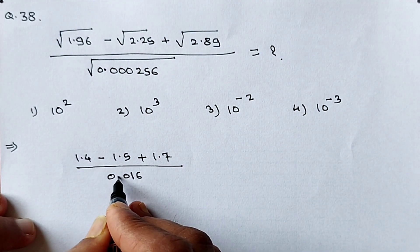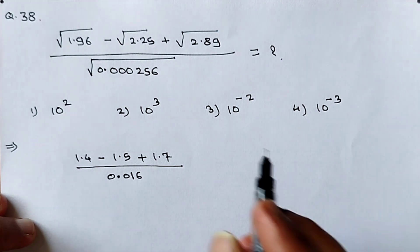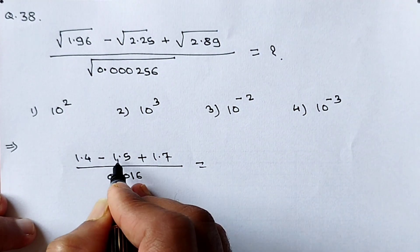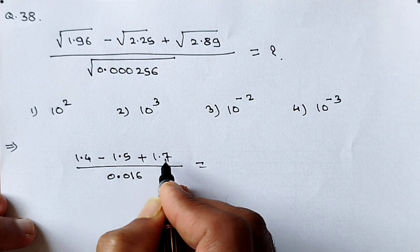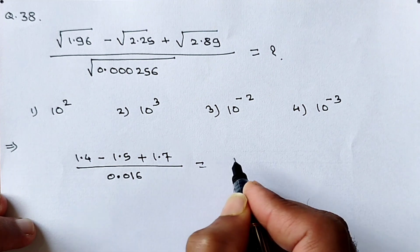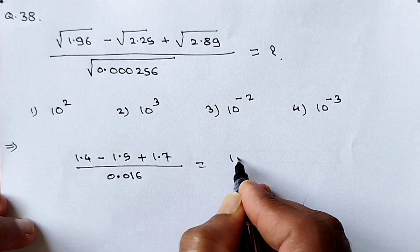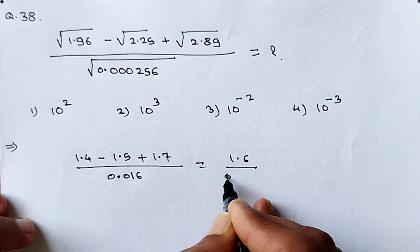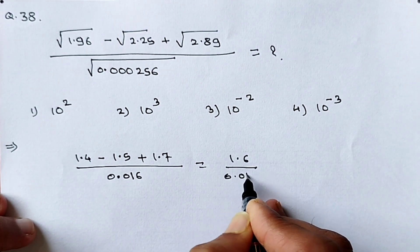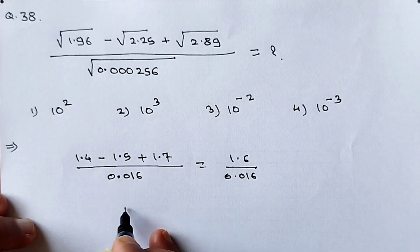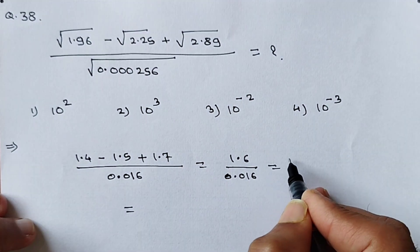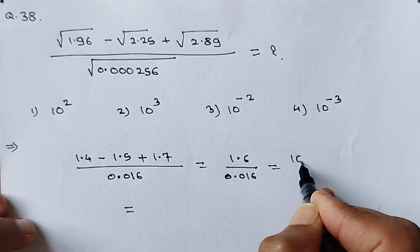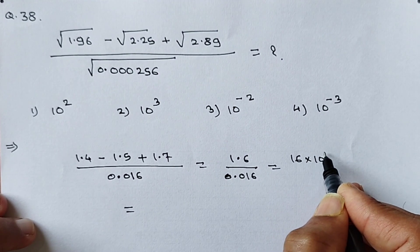Taking the addition: 1.4 minus 1.5 plus 1.7 gives 1.6 in the numerator. So we have 1.6 divided by 0.016. Simplify this — it will be 100, which is 10 raised to 2. So the answer is 100, which is the first option.